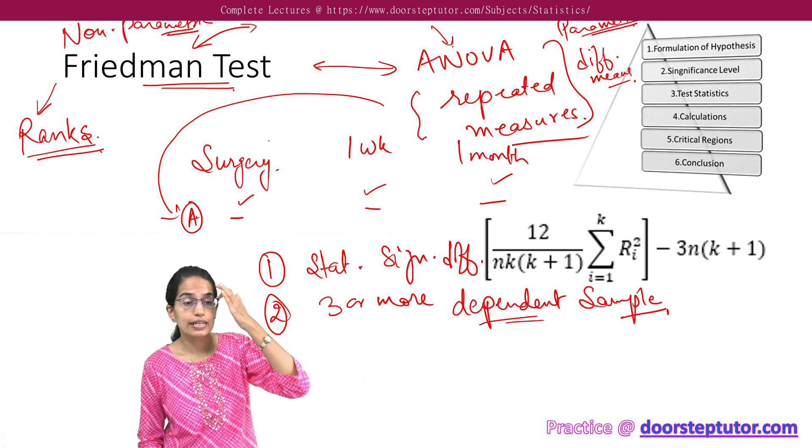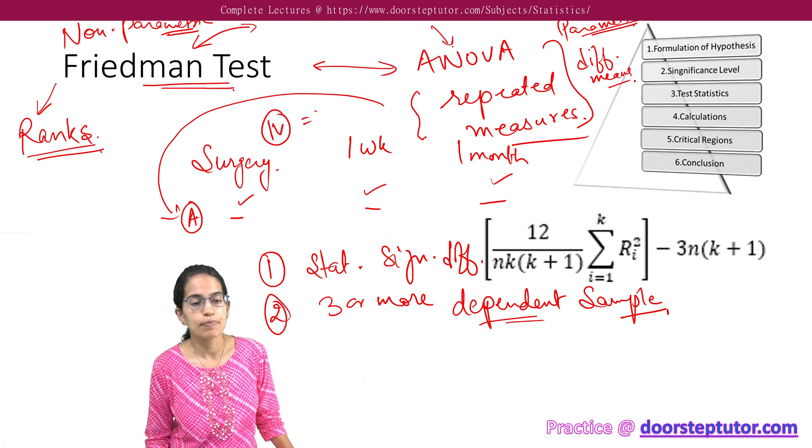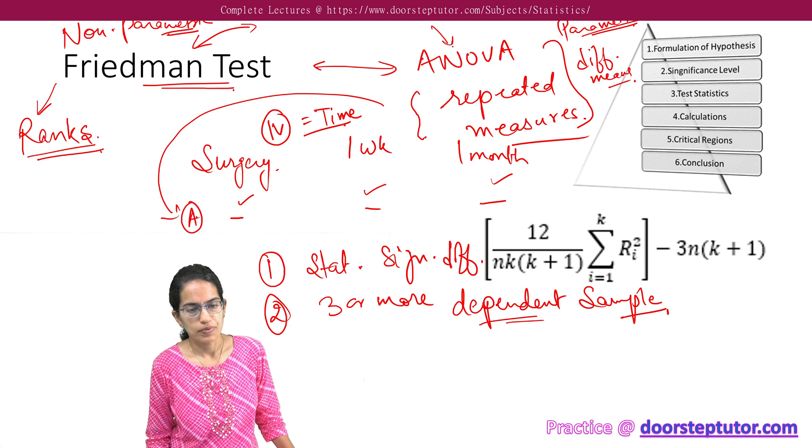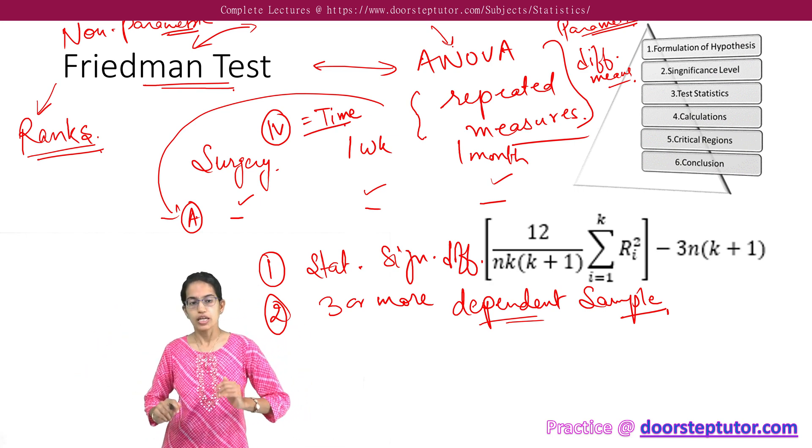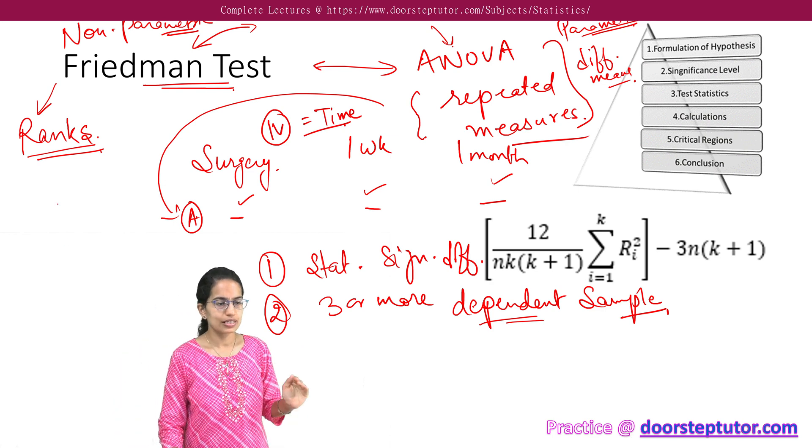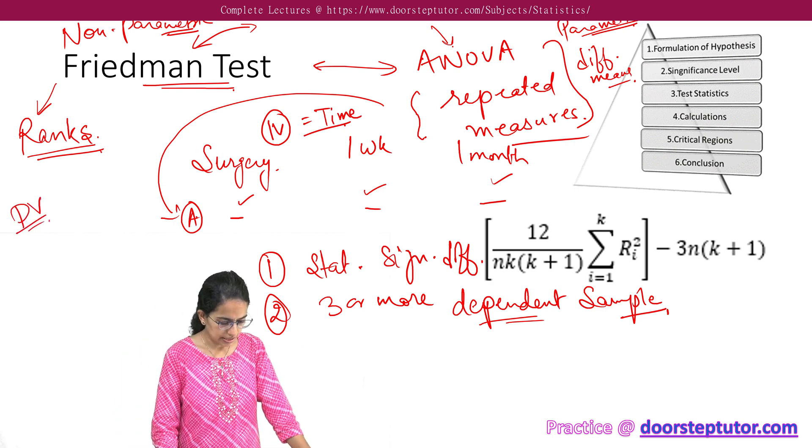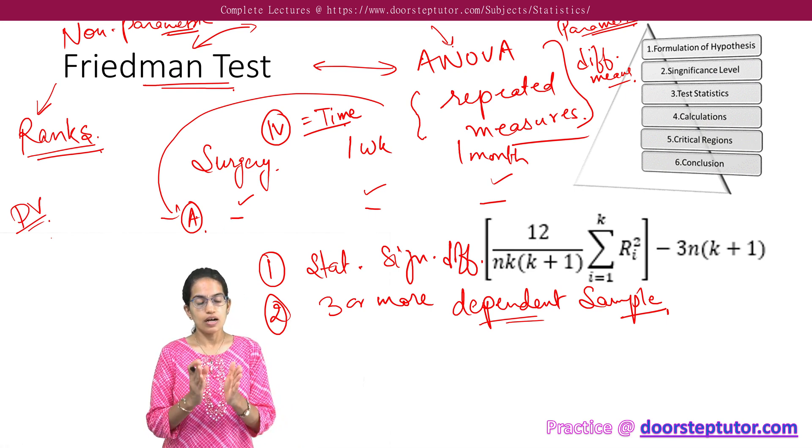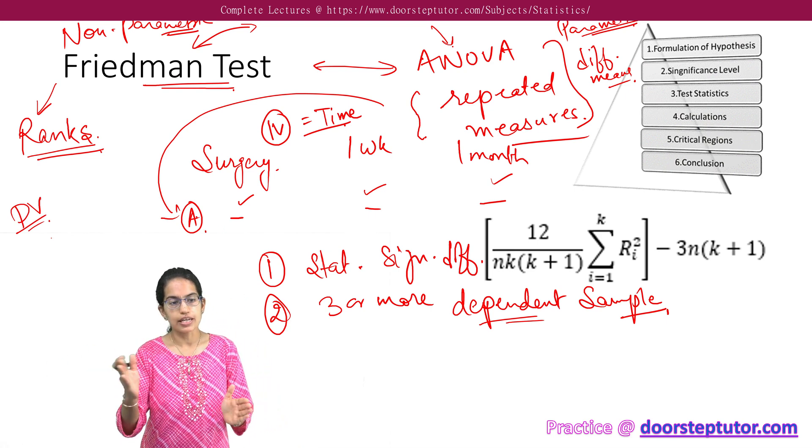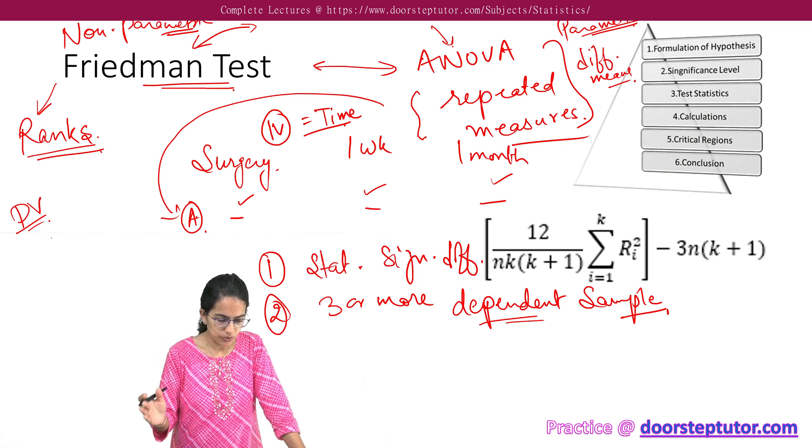Now, what is the independent variable here? Independent variable is the time. So it's immediately after the surgery, one week after the surgery, and one month after the surgery. So independent variable here is time. And what is the dependent variable? Dependent variable is the study on the same person that you are trying to do.